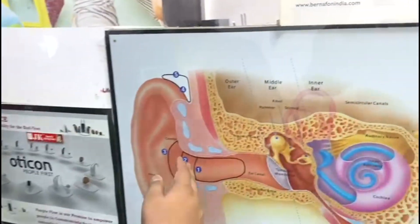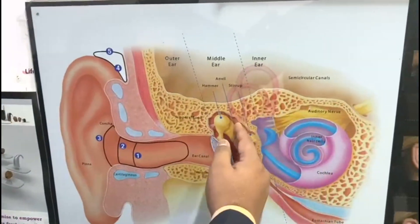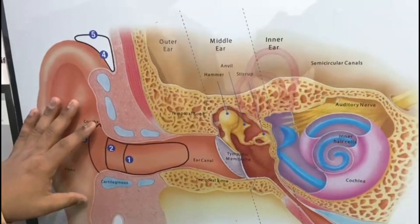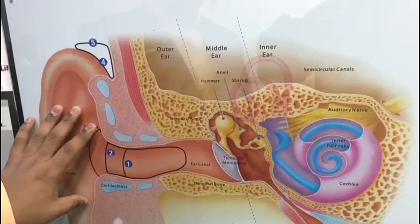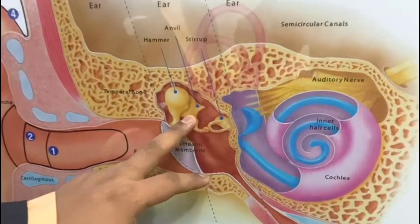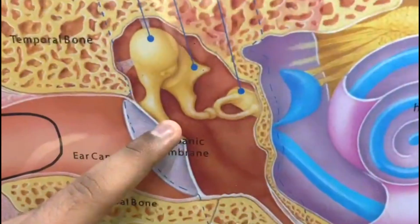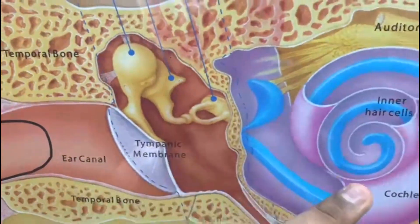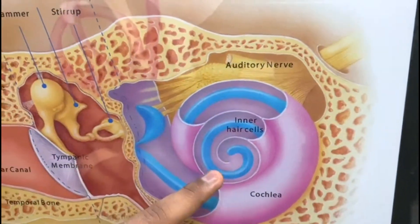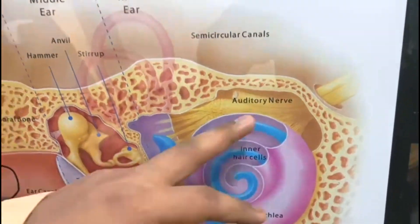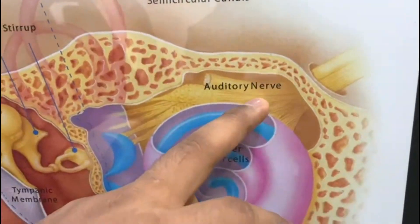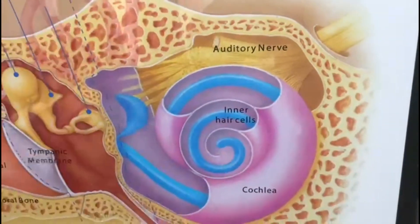As you can see here, the ear is divided into three parts. The first part is known as the outer ear or external ear. The second one, which has bones, is the middle ear. The next most important one is the inner ear, which has the auditory nerve attached — through which sound signals are transferred to the brain.